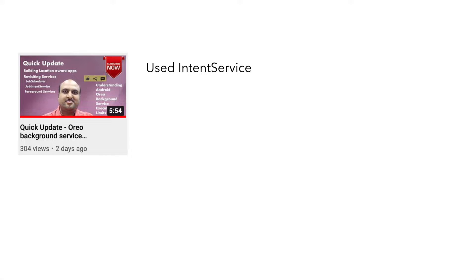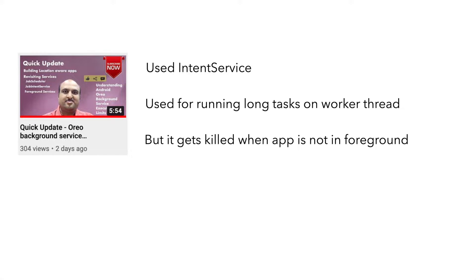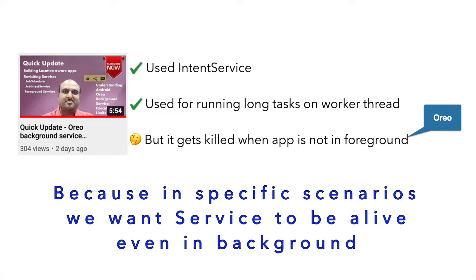We've just used an IntentService and used that to run a long running task on a worker thread. The IntentService got killed when the app was not in the foreground, and this is the default behavior when it comes to services in Android Oreo or further versions. We don't have a problem with using an IntentService or running a long running task with it — the problem is that we don't want our IntentService to get killed just because our application is running in the background. There are various ways to solve this particular problem.